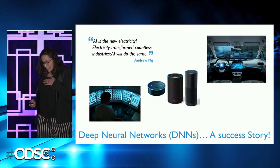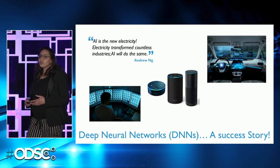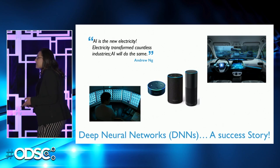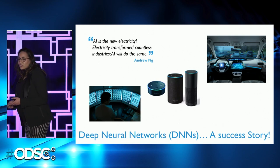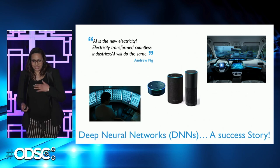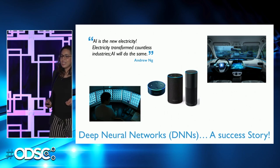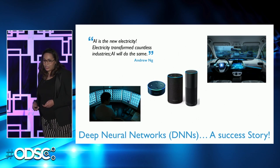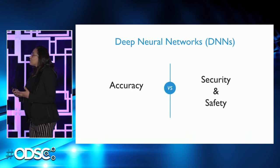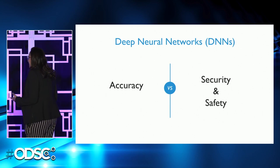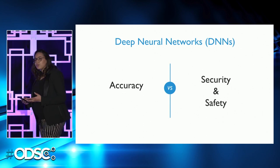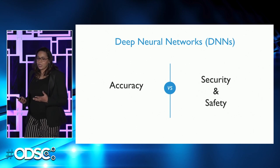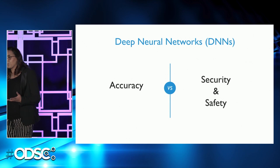Since 2013, deep neural networks have shown phenomenal success in solving many challenging tasks, not only in computer vision, but also in speech recognition and natural language understanding. As a result, deep neural networks are now deployed in many real-world applications. Despite the incredible performance of deep learning, can we really rely on deep neural networks when they are deployed in live crucial applications where security and safety are priority number one?